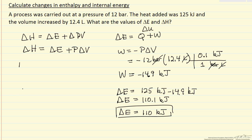Delta H equals delta E. Let's write delta E in terms of Q plus W: Q plus W is Q minus P delta V.